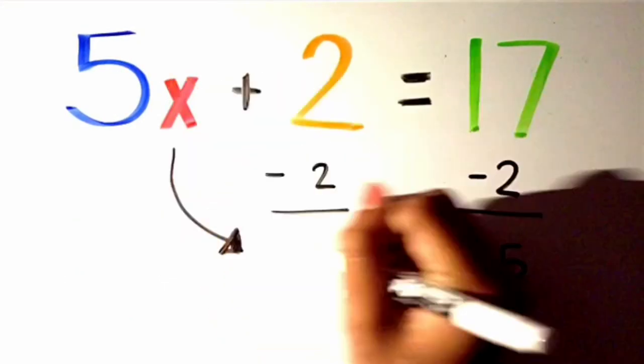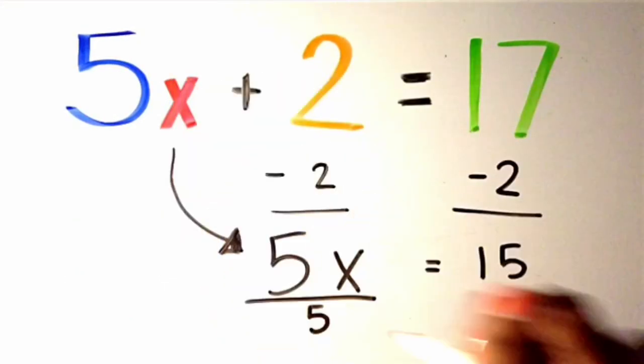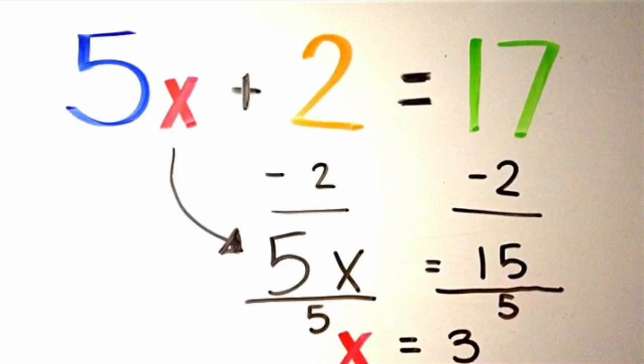Now we minus 2 from both sides to get 5X equals 15. And after dividing both sides by 5, we get X equals 3. Now let's try a tougher problem with a system of equations.